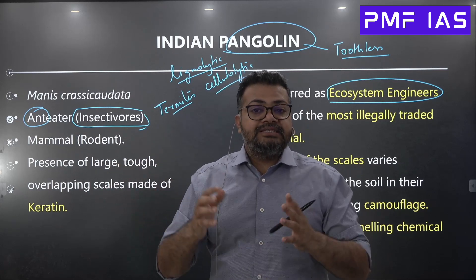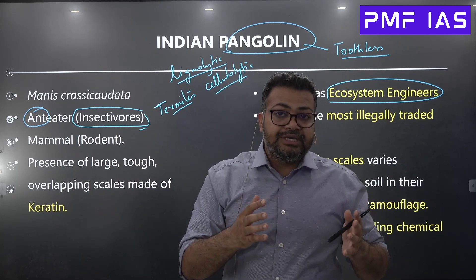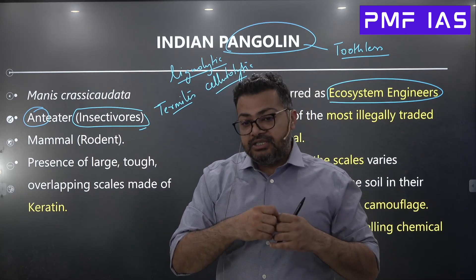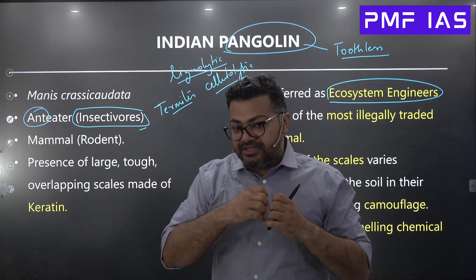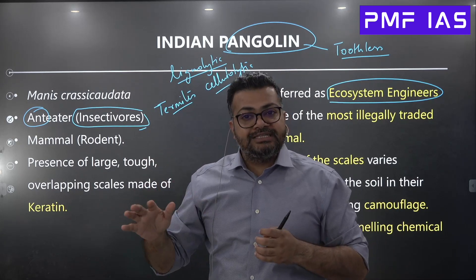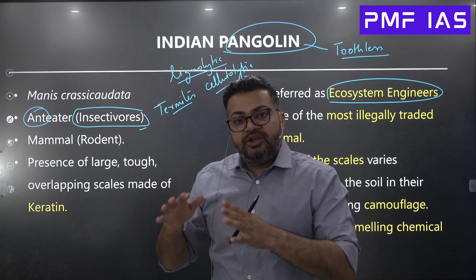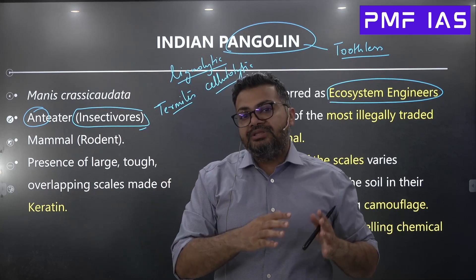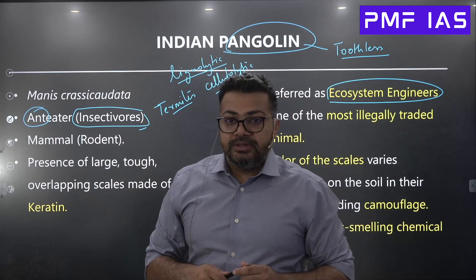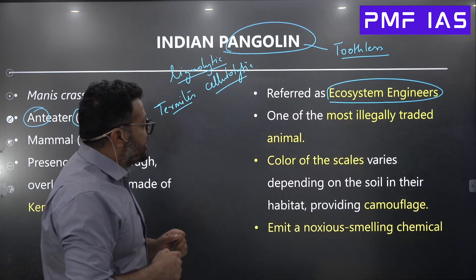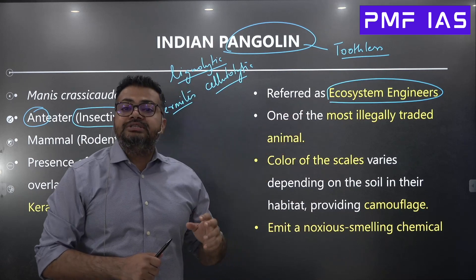By eating termites, pangolins control the population of ligno lytic and cellulolytic organisms, helping trees continue to flourish. Just imagine if pangolins ever went extinct — termites would have a chance of expanding their populations and colonies to such an extent that many trees currently protected by pangolin predation would eventually become vulnerable.